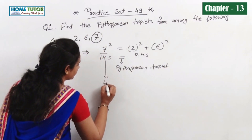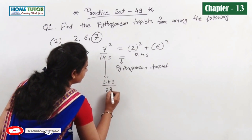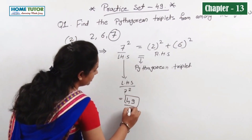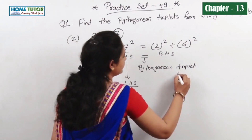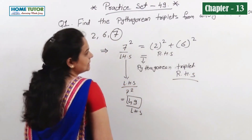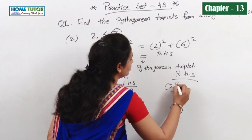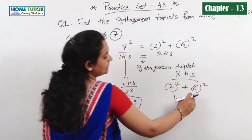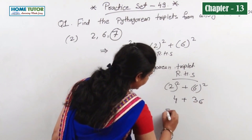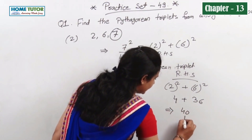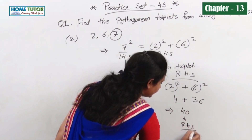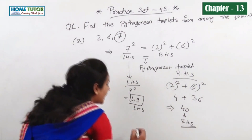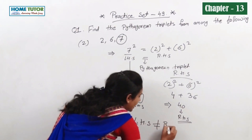Let's check. LHS: 7 squared — 7 multiplied by 7 is 49. So LHS is 49. Now RHS: 2 squared plus 6 squared — 2 multiplied by 2 is 4, plus 6 squared is 36. When we add, the answer is 40. So RHS is 40.